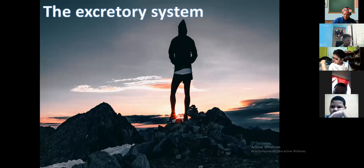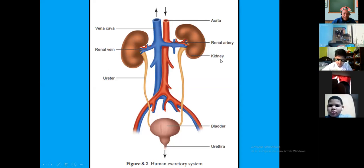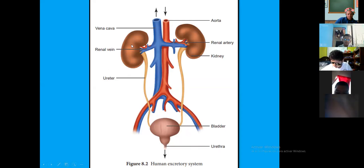5th grade. The excretory system. Okay guys, look at here. Vena cava, renal vein, ureter, aorta, renal artery, kidney, bladder, and urethra. If you look, in this example, we have the excretory human and excretory system.